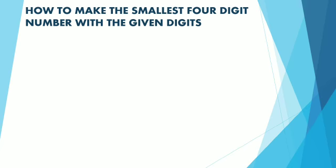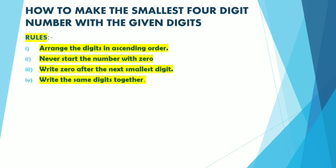Now let us see how to make the smallest 4-digit number with the given digits. Rules. Rule 1: Arrange the digits in ascending order. Rule 2: Never start the number with 0. Rule 3: Write 0 after the next smallest digit. Rule 4: Write the same digits together.